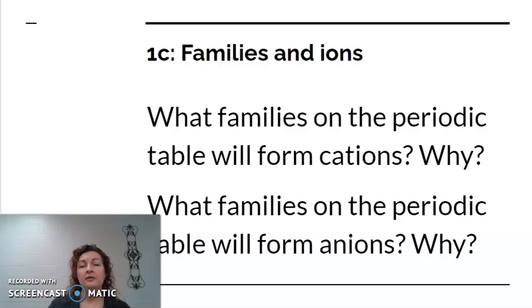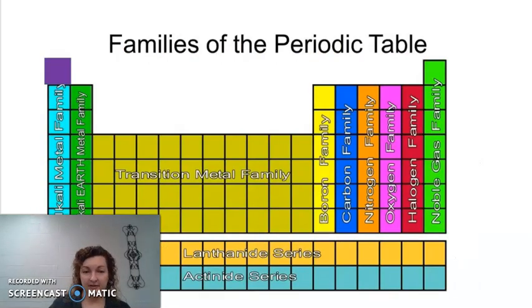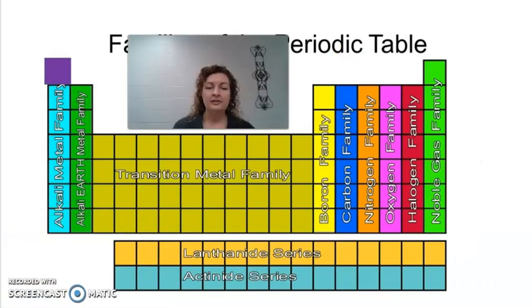So we're now going to look at families. This is saying what families on the periodic table will form cations and ions, but first you have to know what the families are to begin with. Each family has its unique characteristics and properties and we group elements in families because they do act or react the same. So they have unique properties that are all similar. Notice they go up and down.